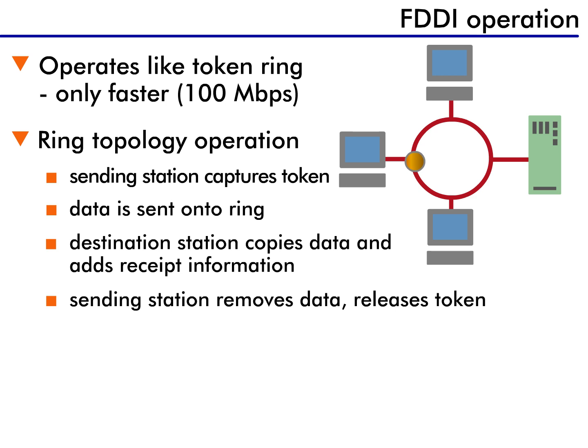To send data, a station must capture and hold the token. Once the sending station has the token, it generates its data onto the network. The data circles the ring until the destination station recognizes its address.